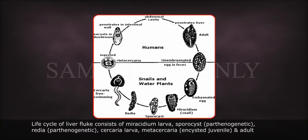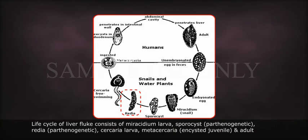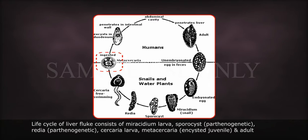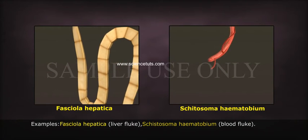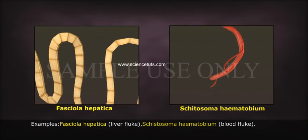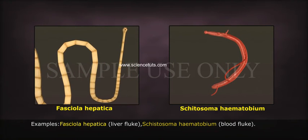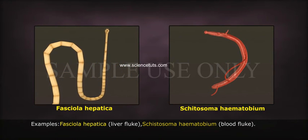The life cycle of the liver fluke consists of: Miracidium larva, Sporocyst, parthenogenetic Redia, parthenogenetic Cercaria larva, Metacercaria, encysted juvenile, and an adult. Examples: Fasciola hepatica (liver fluke) and Schistosoma haematobium (blood fluke).